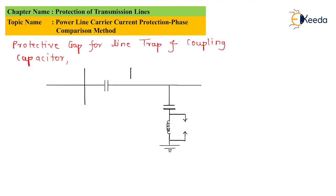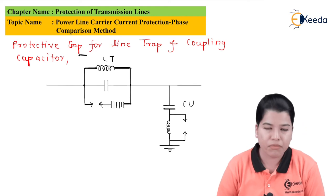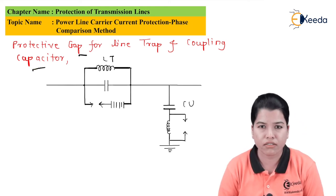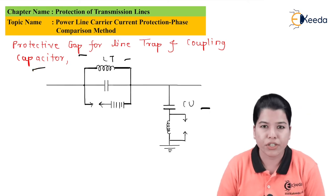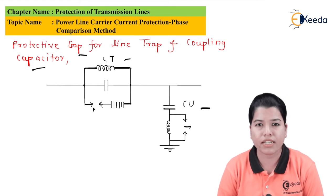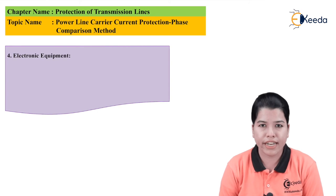The diagram for the protective gap for the line trap and coupling capacitor is as shown. This is the line trap and this is the coupling unit. Here the gap is present. Between this gap, a spark occurs whenever a high voltage appears.